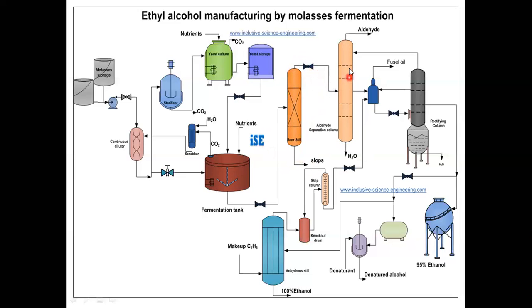Where the aldehyde is removed from this tank and the water is removed as a bottom product. And from this aldehyde suppression column, it is sent to the decanter. This blue colored is a decanter and from this decanter, fusel oil is removed.